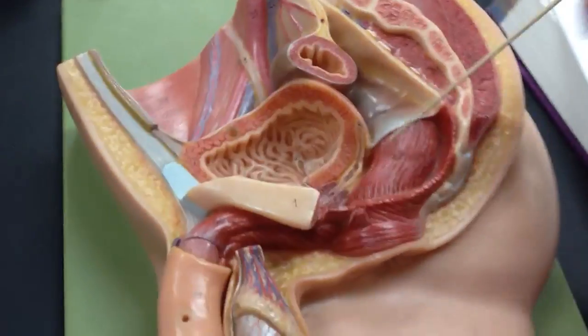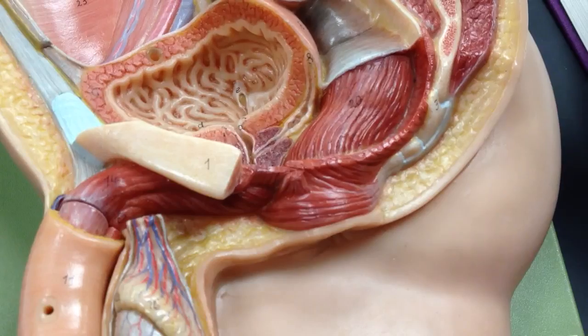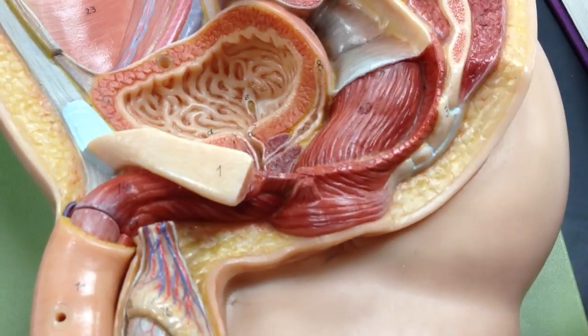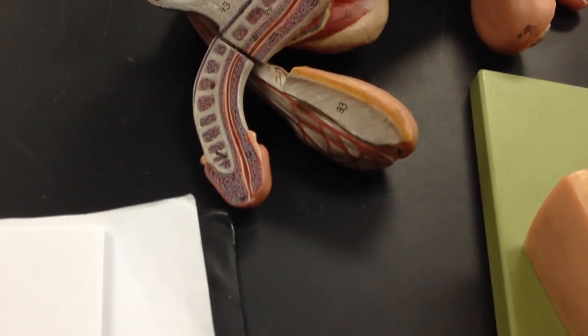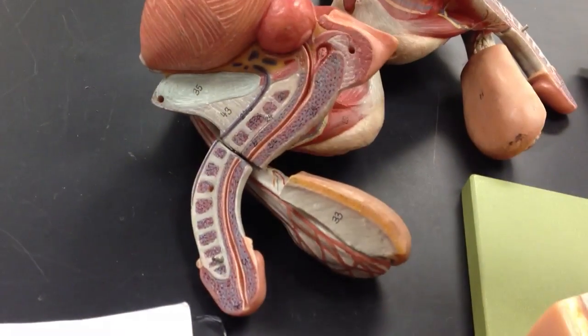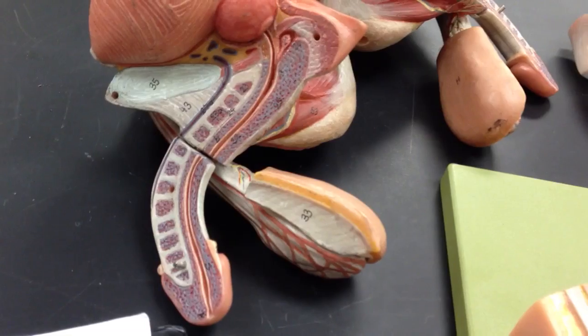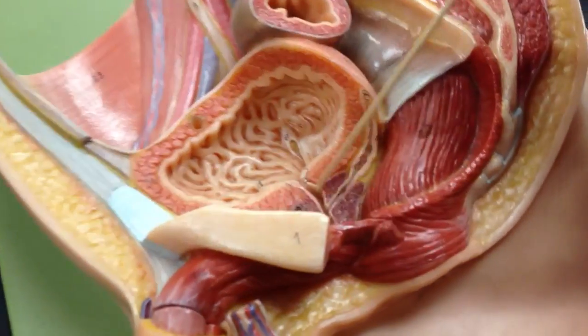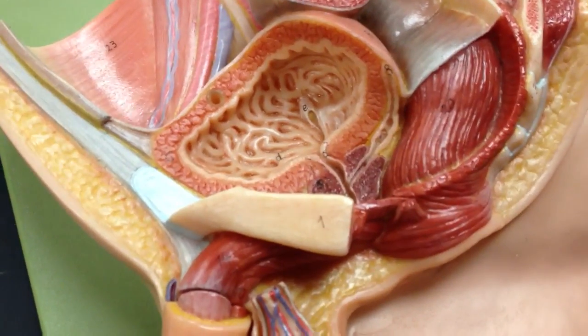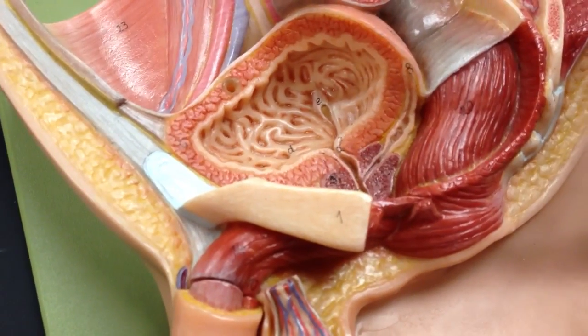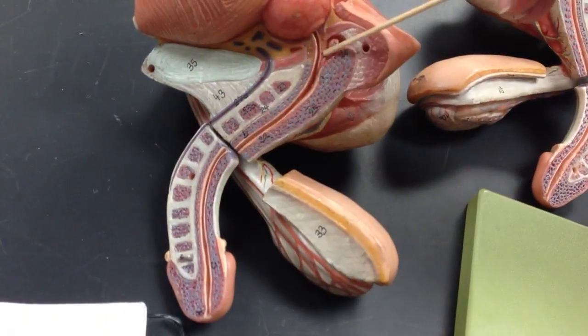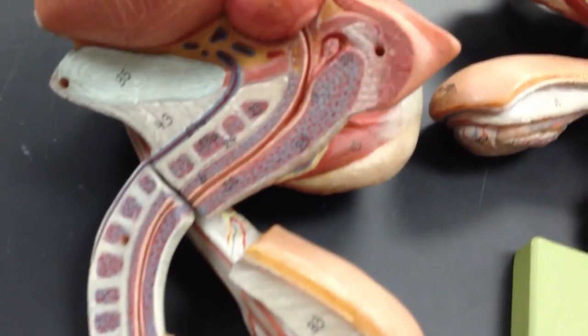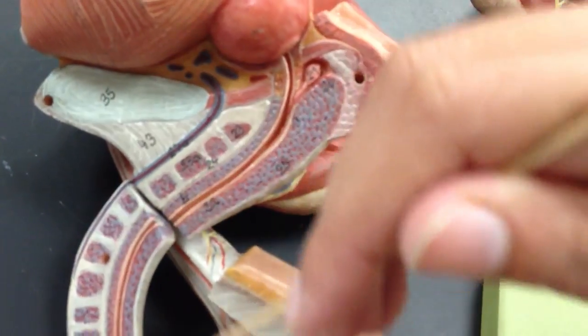This is the ejaculatory duct, and over here you can see the bulbourethral gland. The urethra is composed of the prostatic urethra which is right here, the membranous urethra, and the spongy urethra.